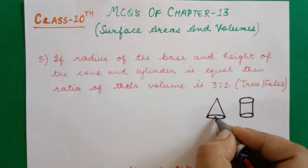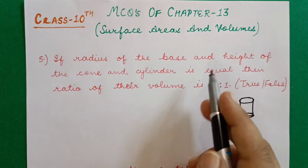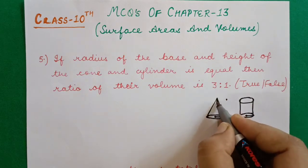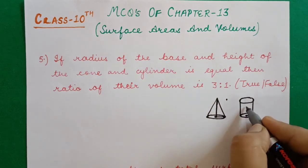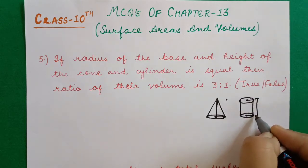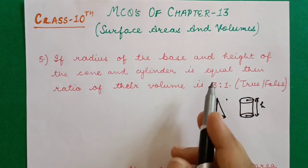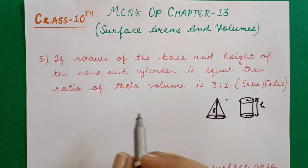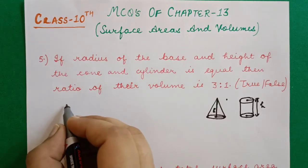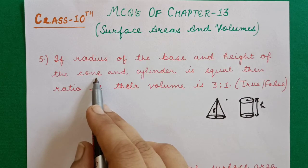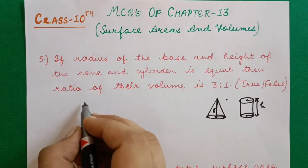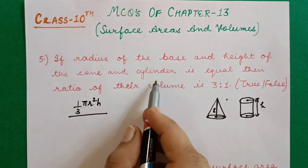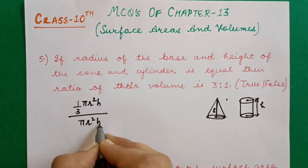Volume of cone = (1/3)πr²h. Volume of cylinder = πr²h. Taking their ratio: (1/3)πr²h ÷ πr²h. Since radius and height are equal, π, r², and h all cancel out, leaving 1/3 ÷ 1 = 1:3. But the statement says 3:1.